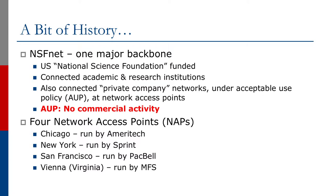We start back in the late 80s. There was the National Science Foundation Network, which was one major backbone — it was very much the Internet as it was known back then. It was funded by the United States National Science Foundation and it connected academic and research institutions together on this early network infrastructure. It also connected a few private company networks under an acceptable use policy at various network access points across the United States. And the acceptable use policy was very strict: it said no commercial activity.